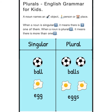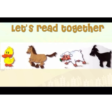For example, 'egg' — the object ada satu sahaja. But when a noun is plural, bila sesuatu tersebut ada lebih daripada satu — more than one — we call it plural.